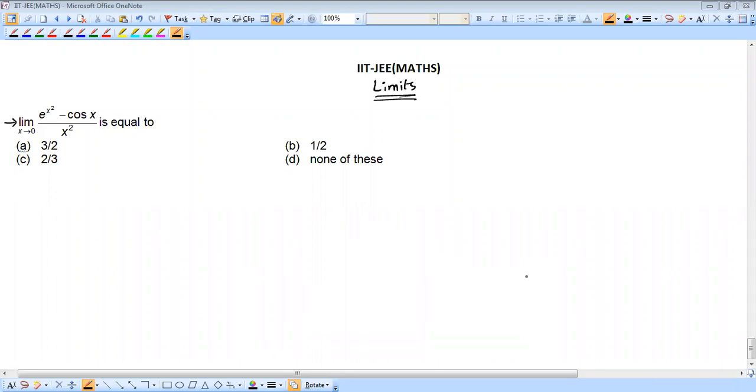Hi students, welcome back to my channel. This is Swara Kumar. Here today, one question on the limits topic. On the screen you're seeing limit x tends to 0, e power x square minus cos x divided by x square is equal to. Before going to this topic, we need to know a small formula.